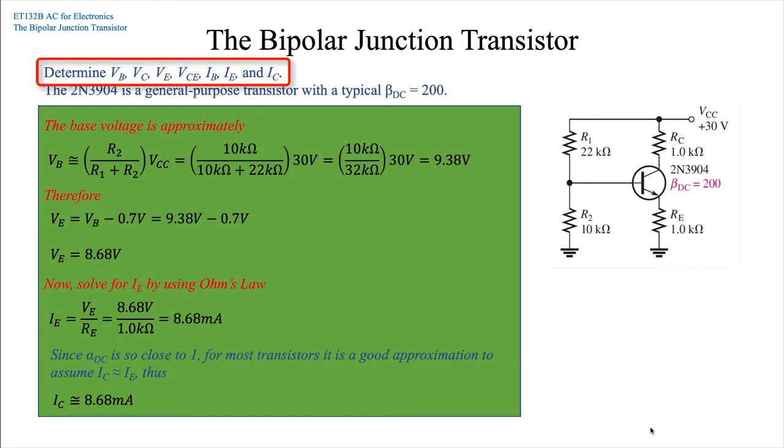We've got VCC at 30 volts, R1 and R2 forming our voltage divider network, a collector resistor of 1k ohm, and an emitter resistor of 1k ohm. We have a 2N3904 transistor with a beta DC of 200. This transistor is typical as a general purpose device.